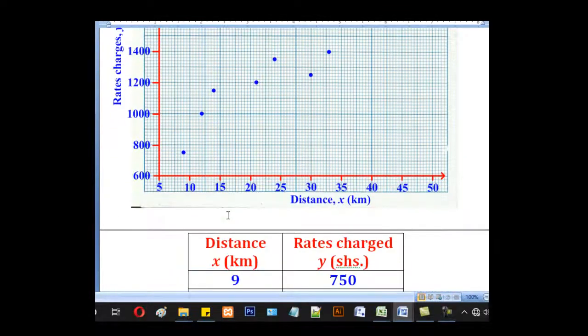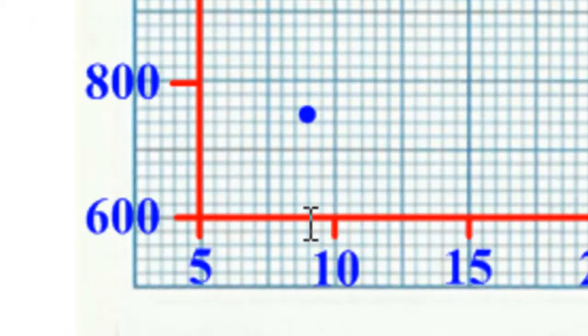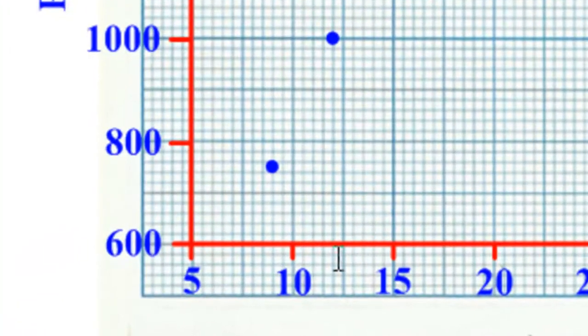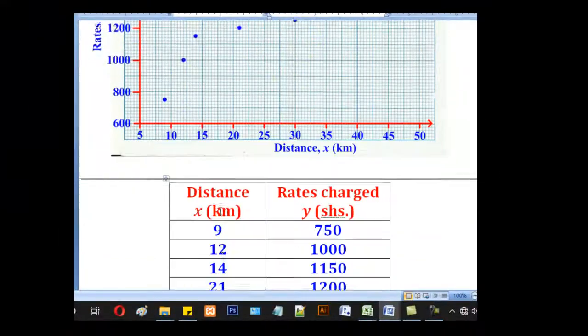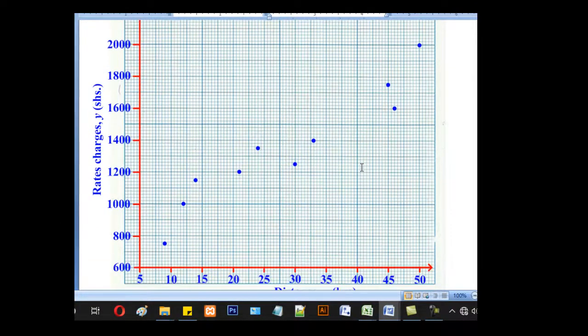After doing that, we shall now go to plotting the scatter points. So they are in pairs, X and Y. So for the X, for example, this is 9 and this is 750. So we shall go here and look for 9 here. Take it up and look for the corresponding Y value, which is 750, to give that point. Do the same for the rest. For example, this is 12, this is 1000. So look for 12 and take it up. Look for the corresponding Y value, which is 1000, to get that point. So we shall do the same for all the remaining points and come up with a scatter diagram as this.